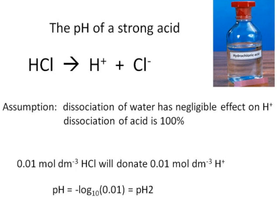If we've got 0.01 moles per decimeter cubed of HCl, that will donate 0.01 moles per decimeter cubed of H+. So the pH will be the negative log 10 of 0.01 which will give us a value of pH 2.